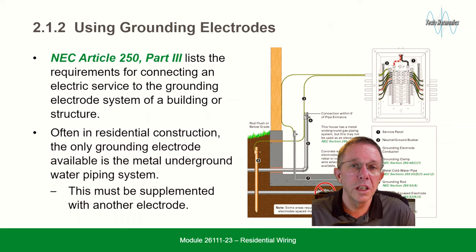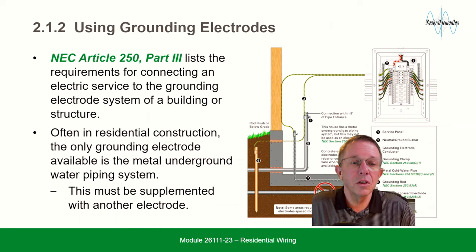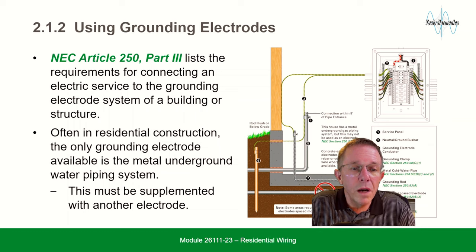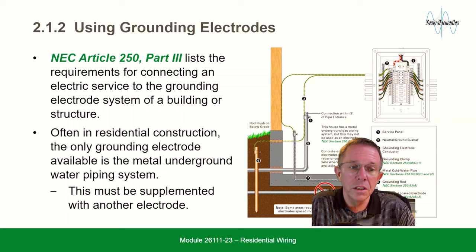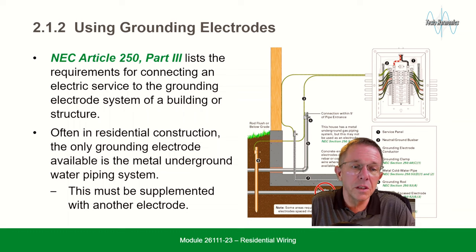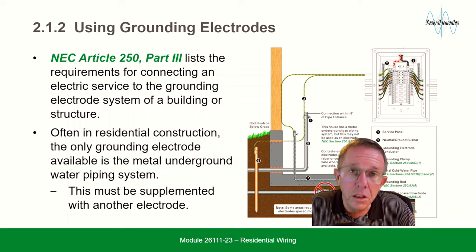Using grounding electrodes: NEC article 250, part 3, lists the requirements for connecting electric services to the grounding electrode system of a building or structure. Often in residential construction, the only grounding electrode available is the metal underground water piping system. This must be supplemented with another electrode.